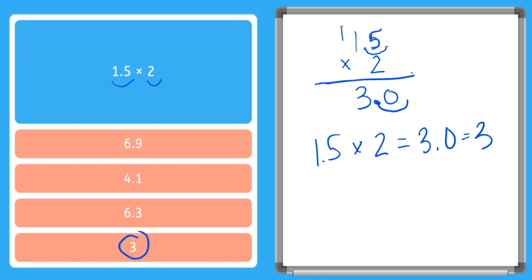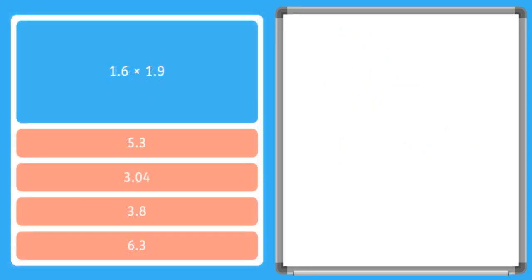All right, now let's try one where we have both numbers as decimals. So in this one, you'll see we have two decimals that we are multiplying together. 1.6 times 1.9. So let's write them out. I have 1.6 times 1.9 equals. So remember, the first thing I do is I'm going to ignore my decimal points for the time being, and I'm just going to multiply as if these are two whole numbers.